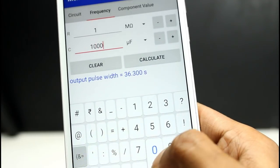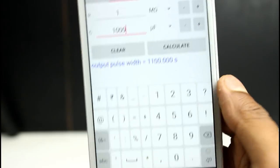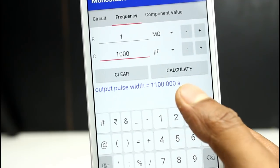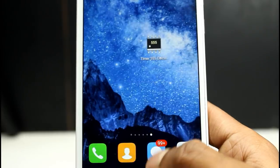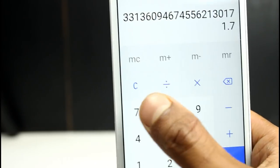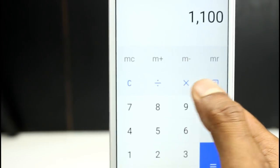Now here I change it to 1000 microfarad, so you will get 1100 seconds. You can calculate 1100 seconds to minutes by dividing by 60, so you will get it in minutes.